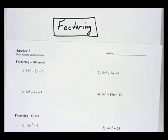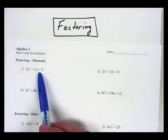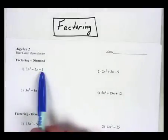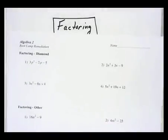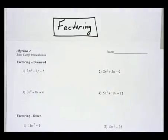Okay, this is the bootcamp remediation for factoring. Hopefully you've had a chance to download the worksheet. I'll be walking you through the first question on the factoring diamond style problems, and then the other one on the lower part that says factoring other. If you can have the worksheet out first, look at the problem. If you think you already know how to do it, try to attempt it first and then watch the video, or continue to watch and hopefully you'll have a better sense of what to do.